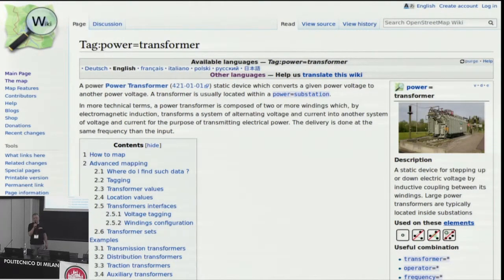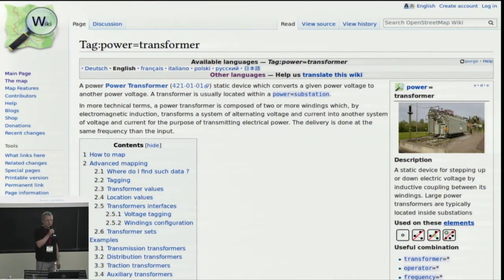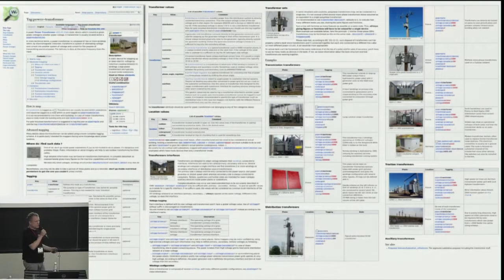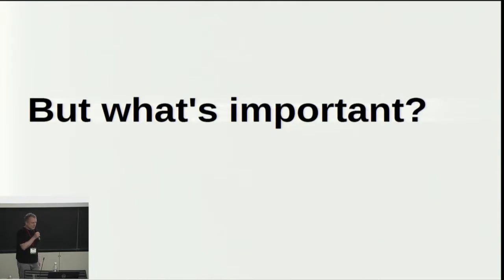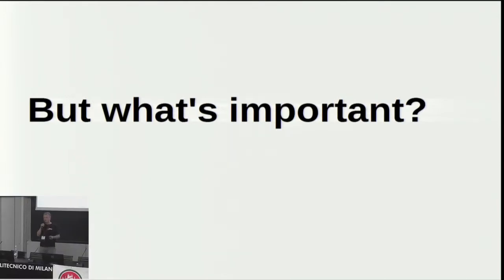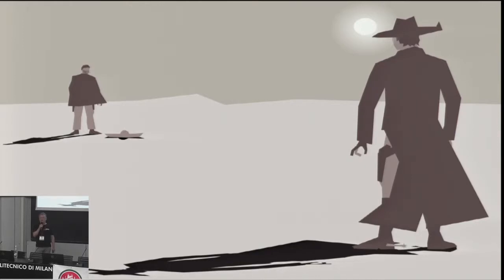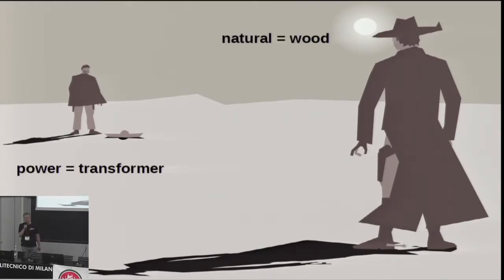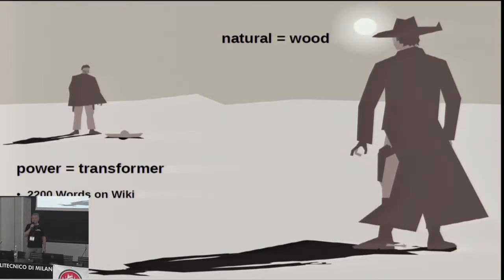Here's another tag about transformers. This page is actually quite long — the transformer page — with very many pictures and examples and so on. Now assume that you would like to find out which of these is more important to the OpenStreetMap mapping community. Is it trees in the forest or is it transformers? You look at the wiki and evaluate what you see. Let's do a quick shootout between power equals transformer and natural equals wood. There are 2,200 words on the wiki in the power equals transformer description.